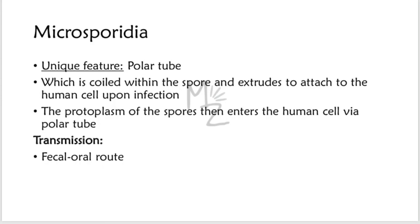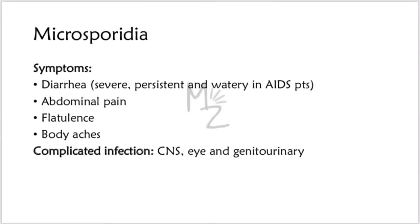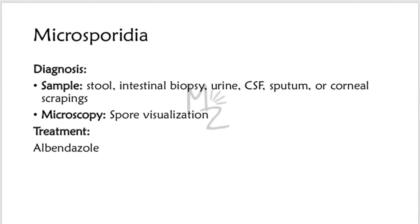Transmission occurs via the fecal-oral route. Symptoms include diarrhea that can be severe, persistent, and watery in AIDS patients, as well as abdominal pain, flatulence, and body aches. A complicated infection can reach the central nervous system, causing encephalitis or meningitis, or the eyes causing ocular infections, or the genitourinary tract. Diagnosis: Samples collected include stool, intestinal biopsy, urine, CSF (cerebrospinal fluid), sputum, or corneal scrapings. Microscopy is used to visualize spores. Treatment of choice is albendazole.